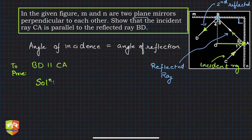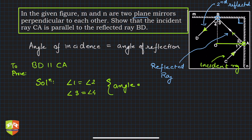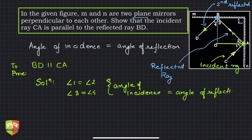From the figure, we can write: angle 1 = angle 2, and angle 3 = angle 4, by the law of reflection — angle of incidence equals angle of reflection. This applies at both mirrors.